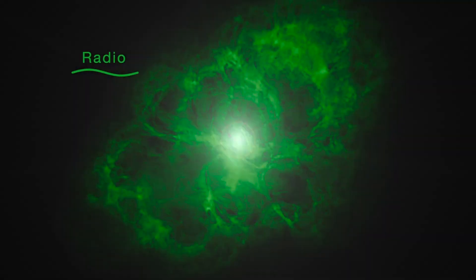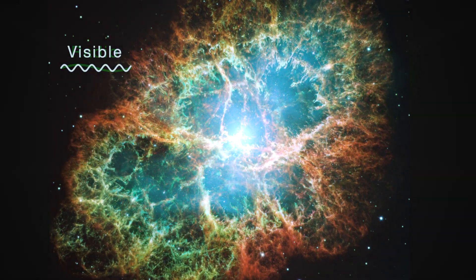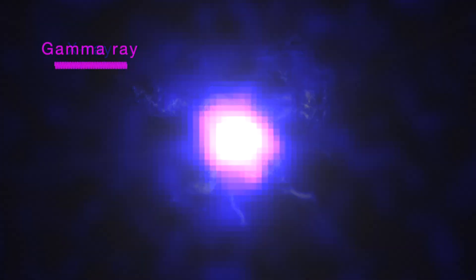The Crab Pulsar spins 30 times a second and steadily blinks in radio, visible light, X-rays, and gamma rays.